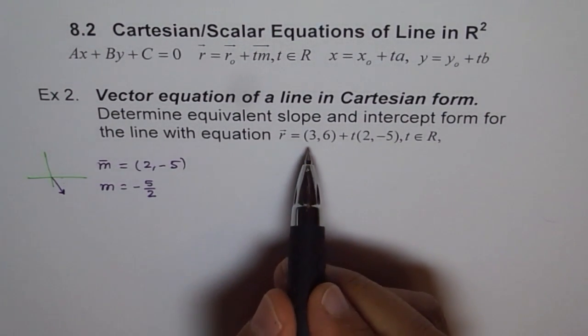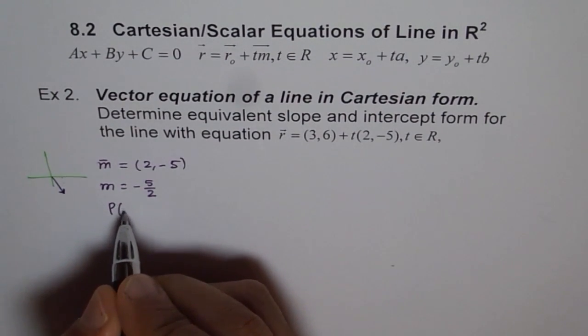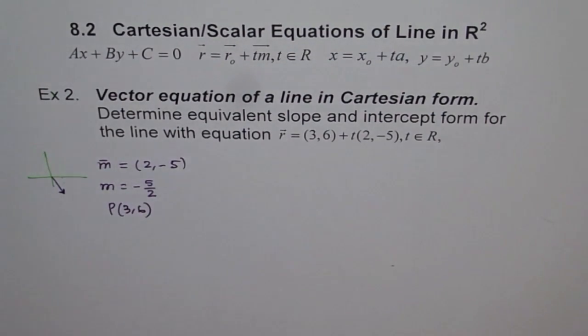And in this equation we have one point and the point is let's call this point P as (3,6). Correct? So if we know a point and we know the slope we can always find the equation of a line.